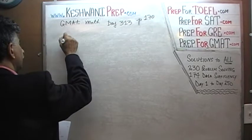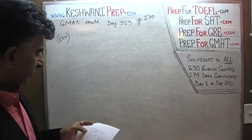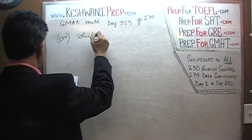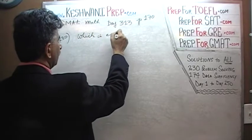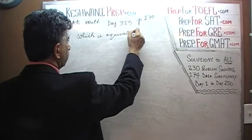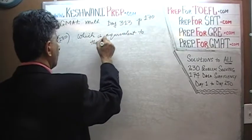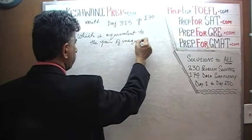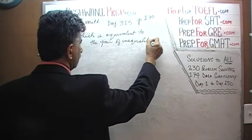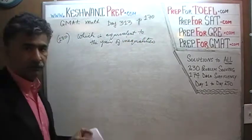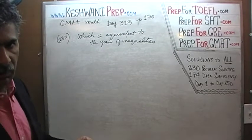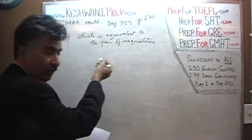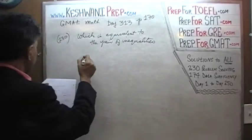Problem number 130, that means 100 more to go after this problem. Here is what it says: Which is equivalent to the pair of inequalities that they give us? They give us a pair of inequalities and our job is to identify one answer choice that is equivalent to what has been shown in these two pair of inequalities.